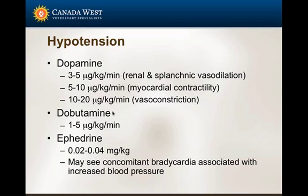In human ICU patients there's up to a 20-fold difference in doses required to increase renal perfusion — so this drug is very individual, and we individualize it to our patients, starting at 5 to 7 micrograms per kilo per minute and going up or down from there.